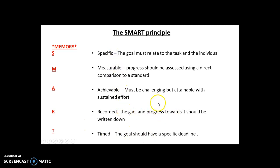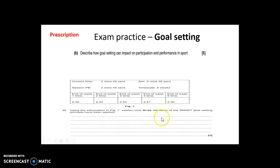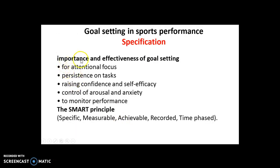Pretty straightforward — goal setting and the SMART principle. You need to be able to describe each element, but most importantly you must link them to sporting examples. Look back at the interpretation question — try to identify how three elements of the SMART goal setting principle have been applied. I'll give you another scenario in the next lesson, but please try to make quick notes on this. Importance of goal setting, the SMART principle — okay, thank you.